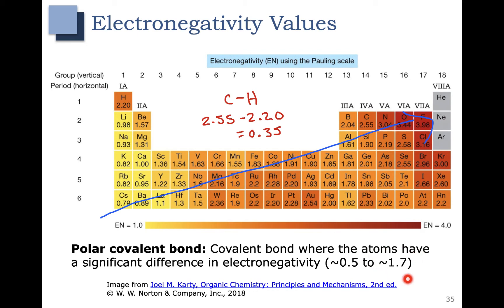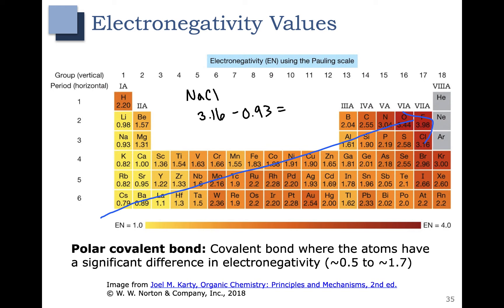What happens when we go above 1.7? Let's look at sodium chloride. Chlorine has an electronegativity value of 3.16 and sodium has a value of 0.93, giving a difference of 2.23 — well above the range. That means it's not a polar covalent bond; it's actually an ionic bond. Bonds with differences below 0.5 are non-polar covalent, and bonds with differences above 1.7 are considered ionic.